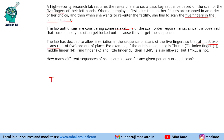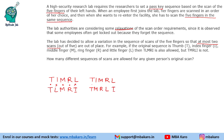So the original sequence is T I M R L, and it allows T L M R I. T, M, and R are at the same place, but two are out of place — so this is allowed. However, if the original sequence is T I M R L and the person inputs T M R L I, that is not allowed because there are four wrong positions. You can have a maximum of two wrong sequences.